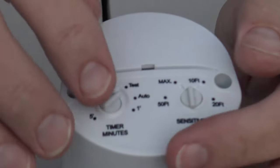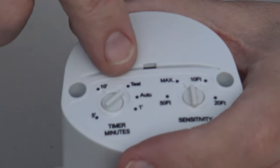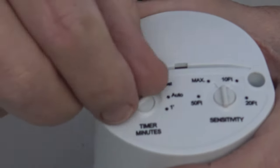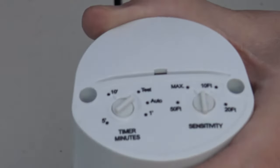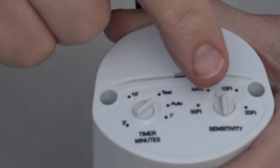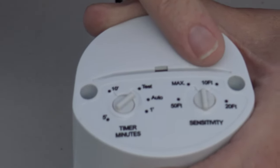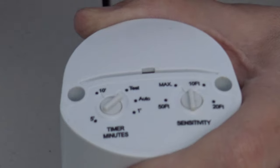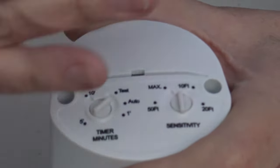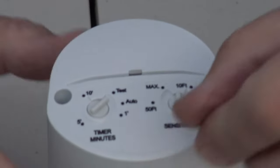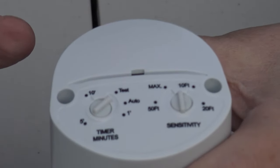Take the controls, set your minutes dial to test, which is right there. Now there's a stop right there, so you can't go any further. Set it to test. And what I typically do is I set the sensitivity, which is the distance to the middle point, which is about 30 feet. You can always adjust that later.